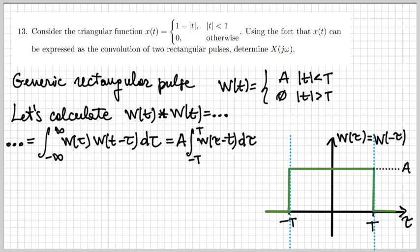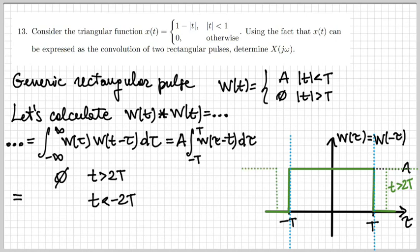My integration interval is between minus T and T — I marked it in blue. When t is larger than 2·capital T, my signal is shifted by a quantity larger than 2T and falls completely outside of the integration boundaries, so the result of the integral is zero. The same thing happens when t is smaller than minus 2T — it falls outside of the integration interval, so again the result is zero.